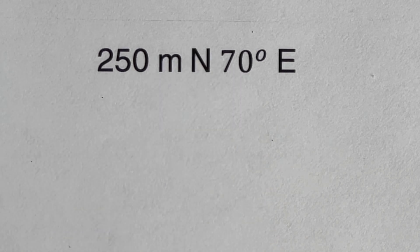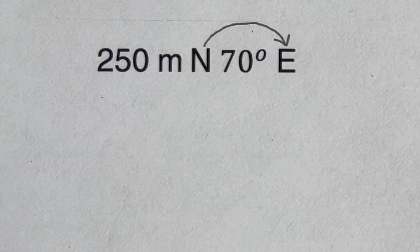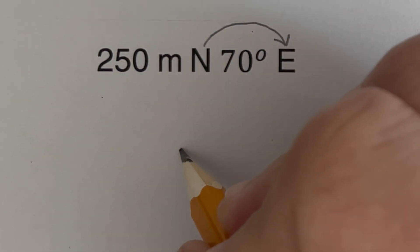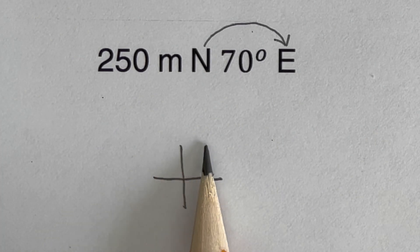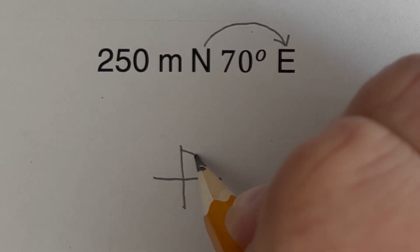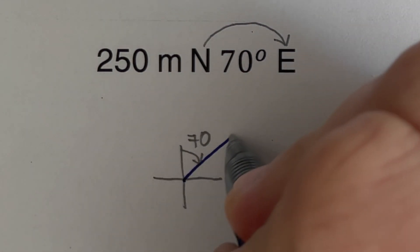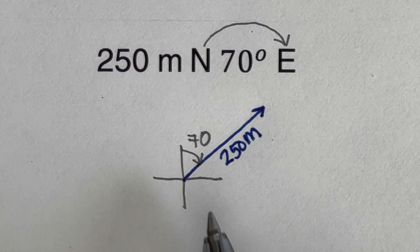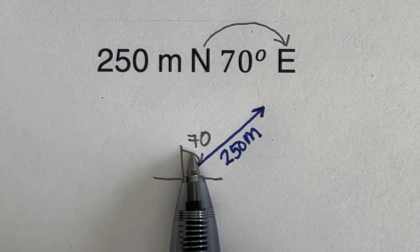The next one says 250 meters north 70 degrees east. We start from the north and measure 70 degrees going to the east. Drawing the direction guide, we measure approximately 70 degrees from north toward east, and this line represents 250 meters north 70 degrees east.